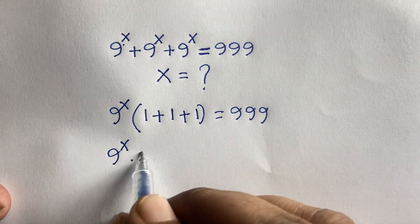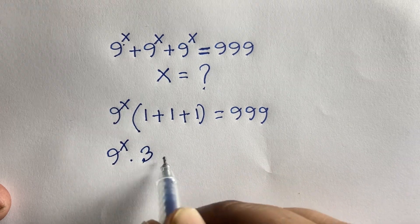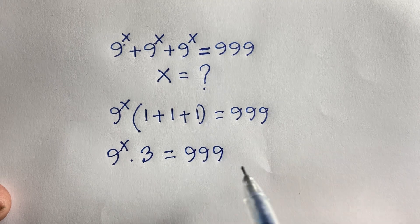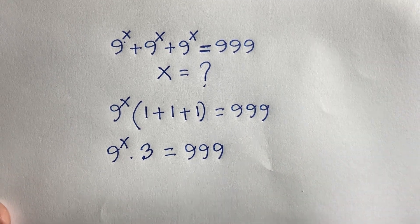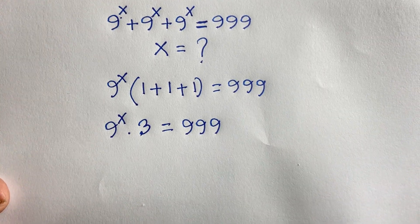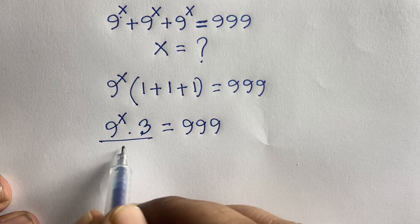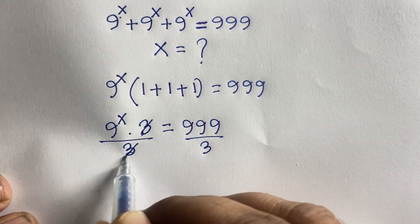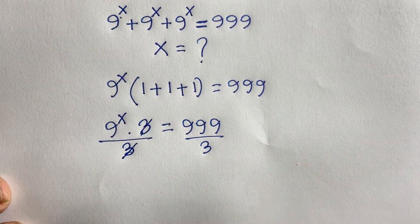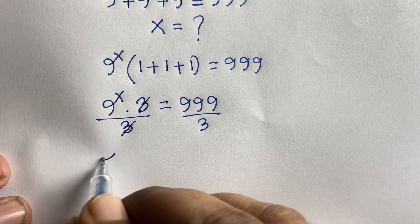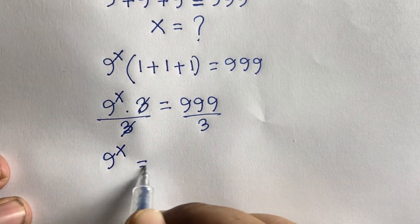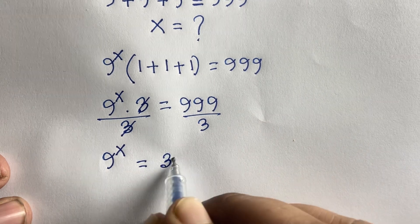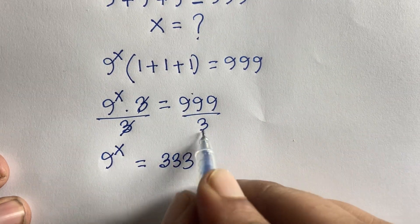So 9^x times 3 = 999. Dividing both sides by 3, the 3s cancel, and we find 9^x = 333.